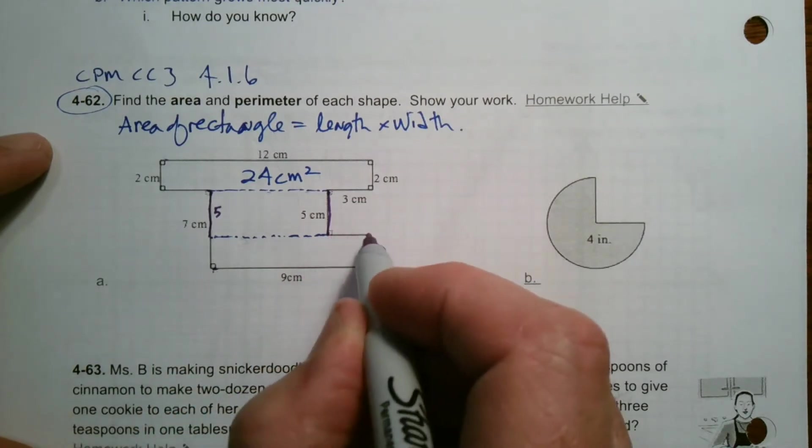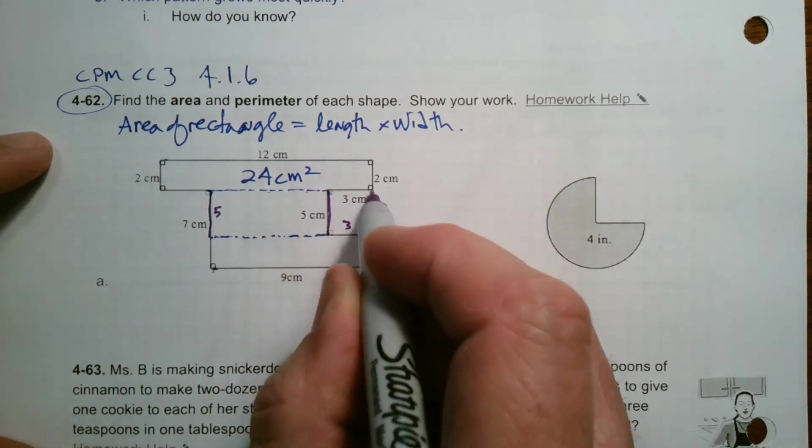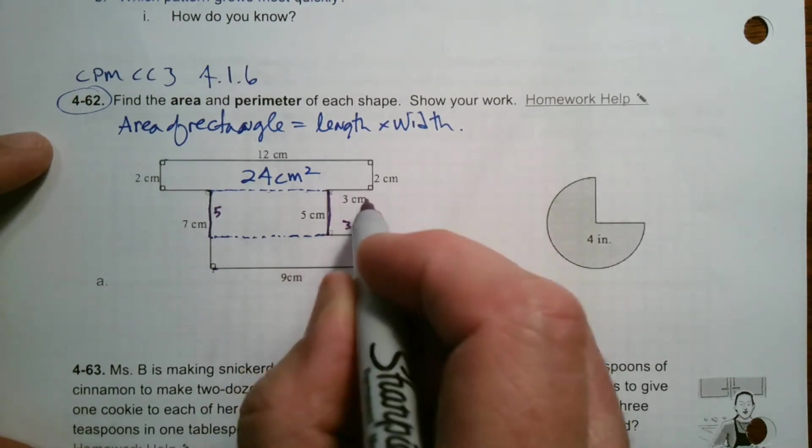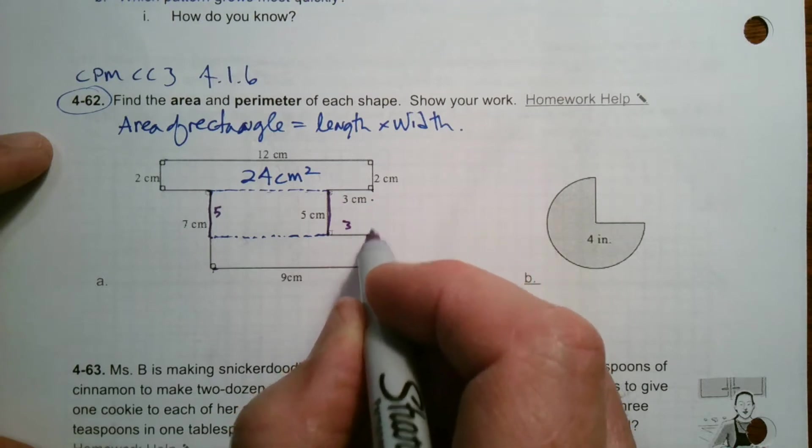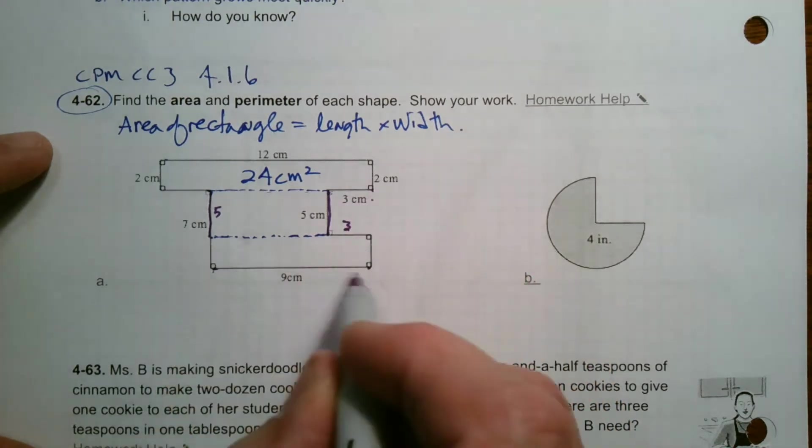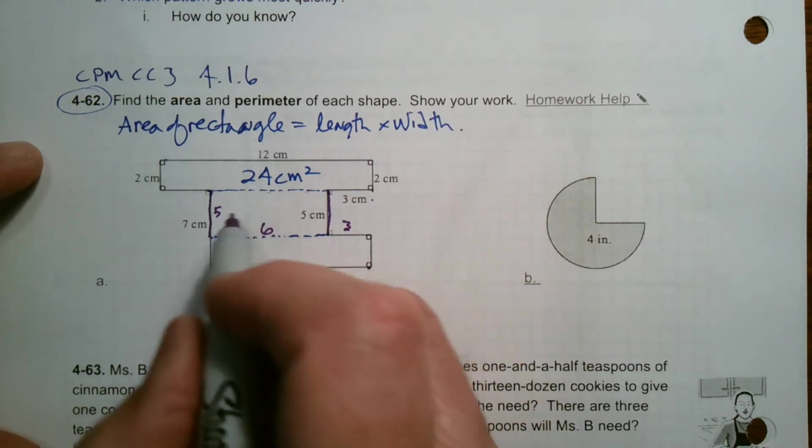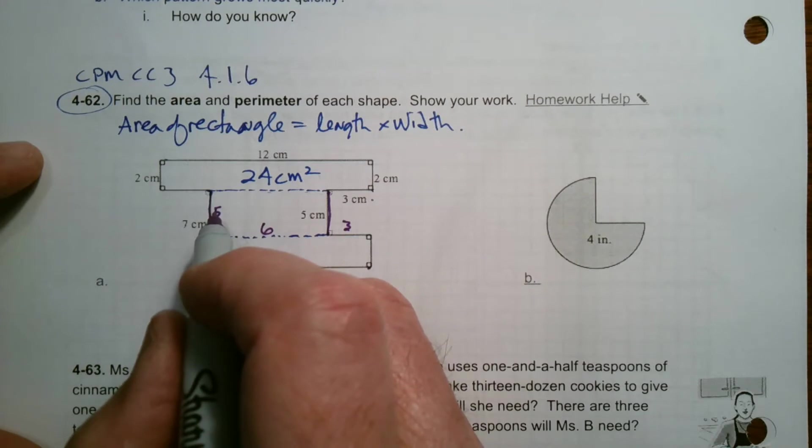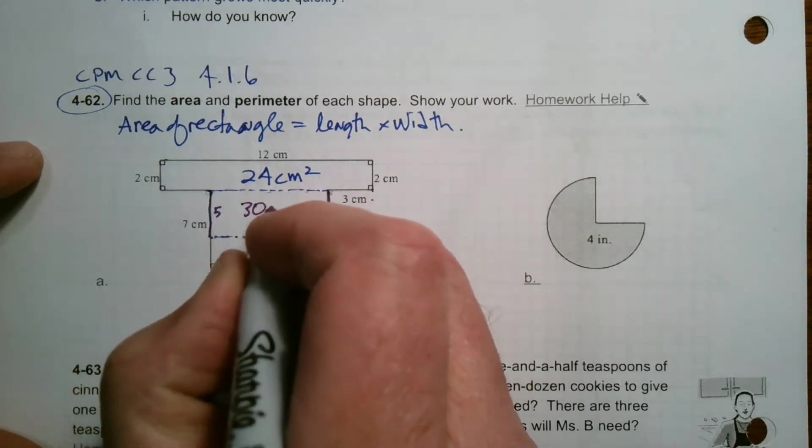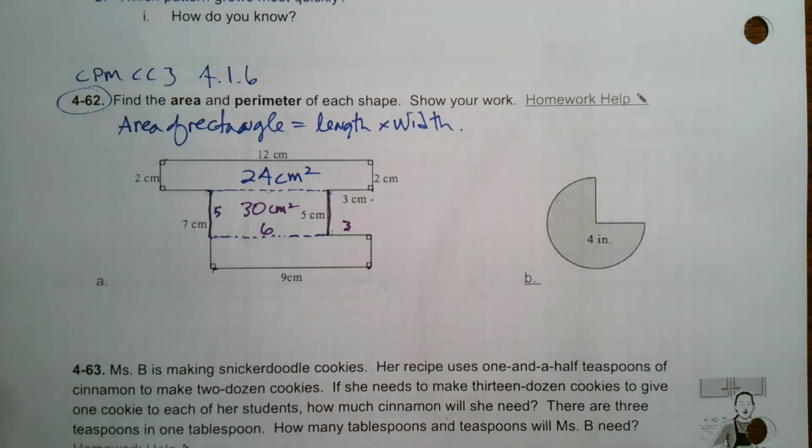And from here to here, we can see is three because why? Because this little space outside is also a rectangle if I were to connect it here. And so opposite sides are the same. So that's three. So therefore, if that's nine and that's three, then this has to be six. So I can say then my area inside is five times six, which is 30 centimeters squared. So that's the area of that middle rectangle.